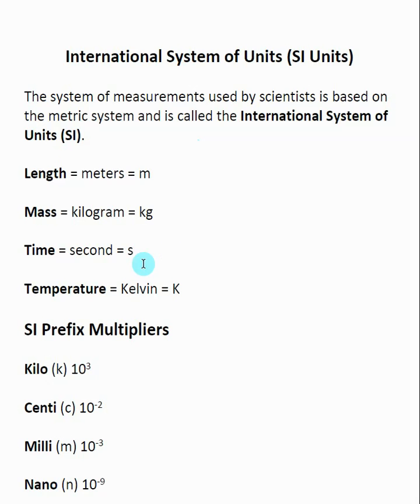With this, here are the four main ones that we're going to be looking at. Length is in meters, mass is in kilograms, time is in seconds, and temperature is in Kelvin. We're going to talk about Kelvin temperatures a little bit more in just a second.